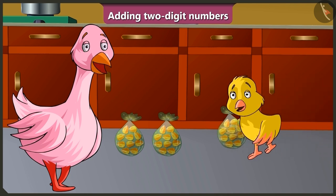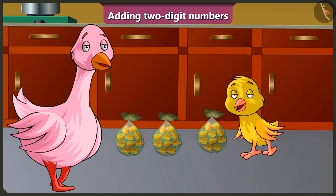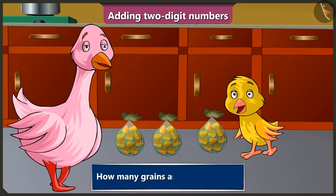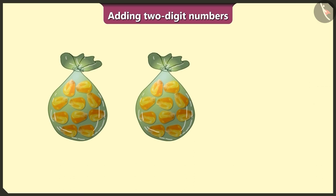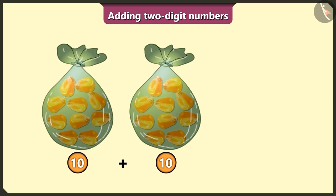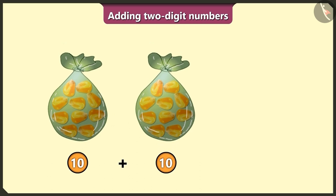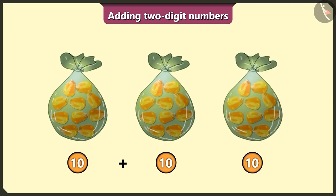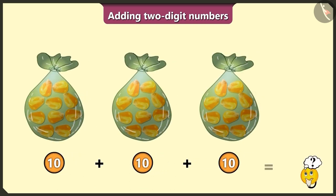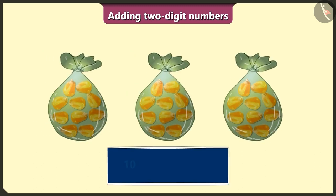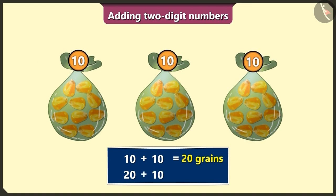Peeloo, keep the kernels here. Aunty, now tell me how many grains are there in total? See Peeloo, here we have two bags of 10 corn kernels each, that is two tens. If we add another bag of 10 kernels to this, then how many grains are there in total? Here, if we add two tens, it becomes 20. Adding one more ten, we will get a total of 30 grains.